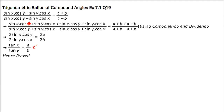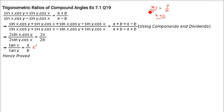So what we will do is apply componendo and dividendo. Componendo and dividendo: if x/y = p/k, then when we apply it, the numerator becomes (x + y) and we take the same subtraction. Similarly, (p + k)/(p − k). This is componendo and dividendo.